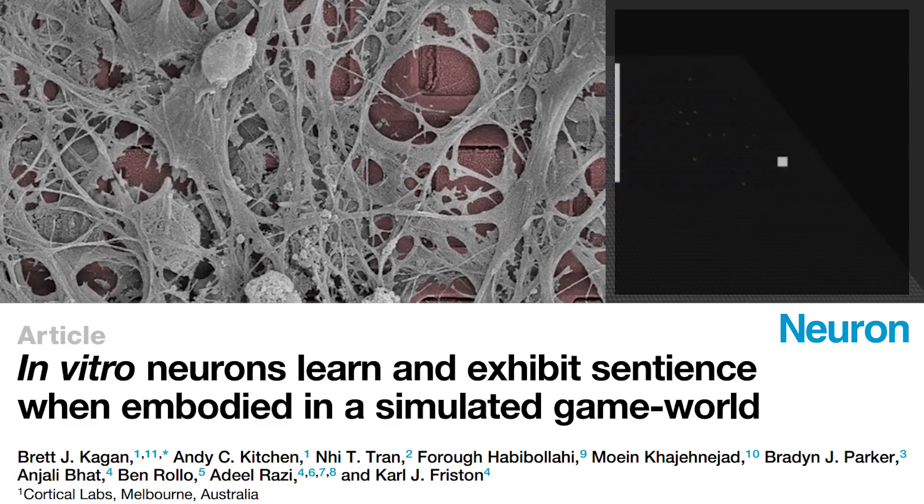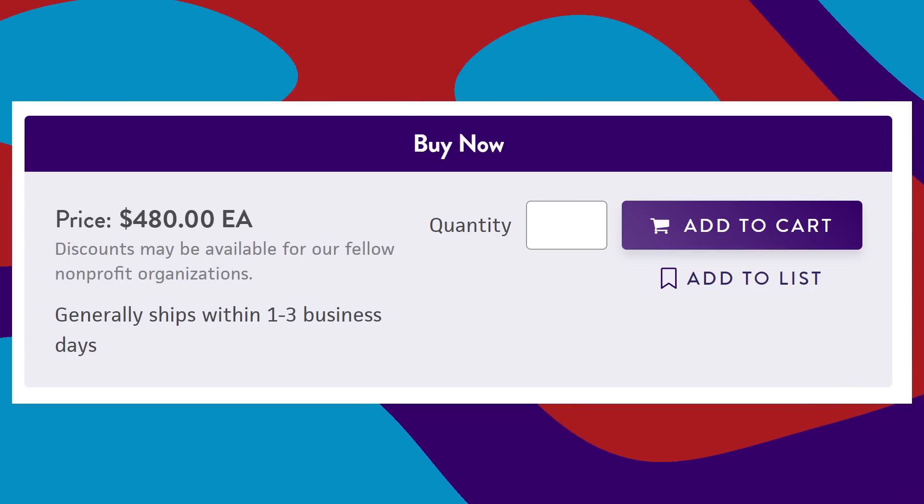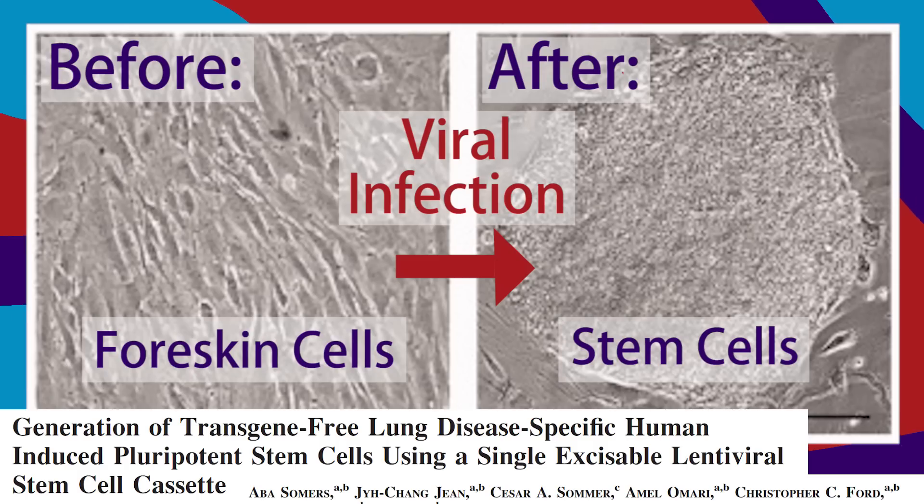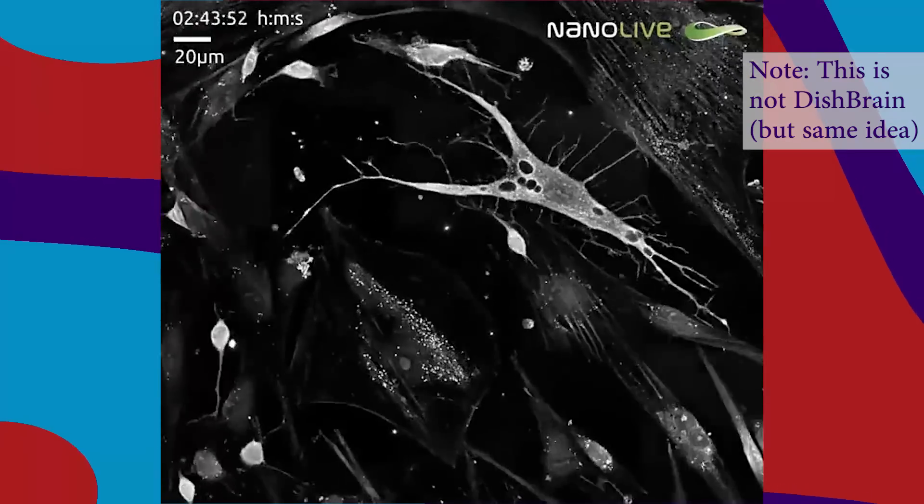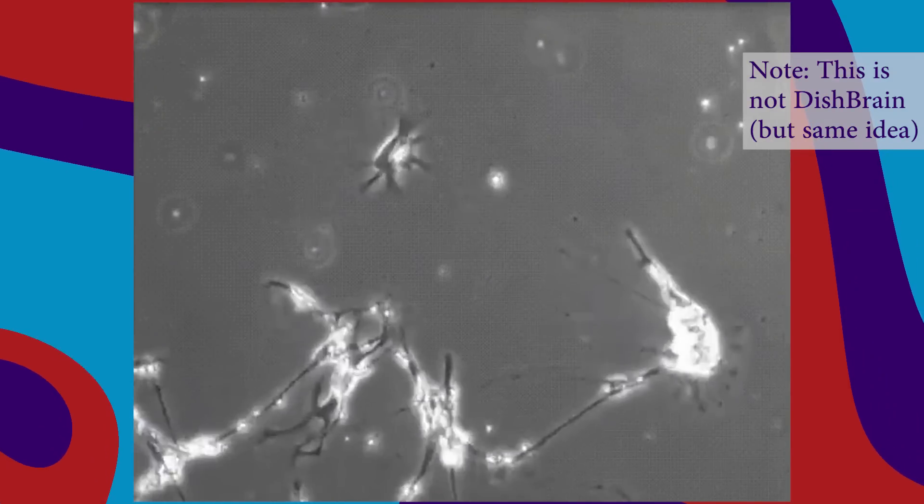For some little brains, life begins at circumcision. Baby foreskin cells are frozen in liquid nitrogen and sold on the internet to a lab that infects them with a virus that turns them into stem cells. Feed them the right brain food, and they can grow into mature cortical neurons in a couple weeks, talking to each other with electrochemical signals.